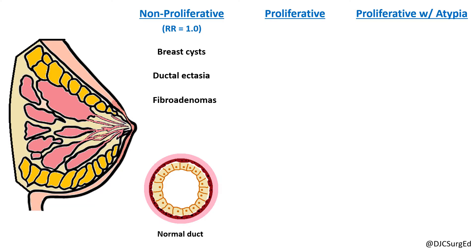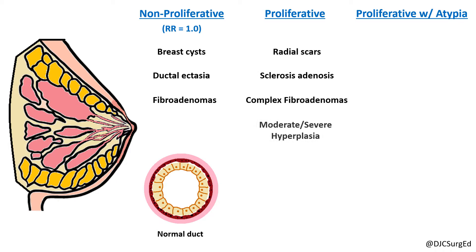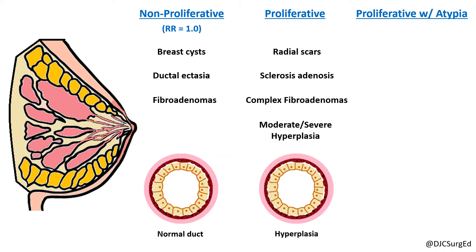Proliferative lesions without atypia include radial scars, complex fibroadenomas, and moderate or severe ductal hyperplasia, and carry a relative risk of breast cancer of 1.5 to 2.